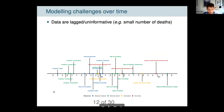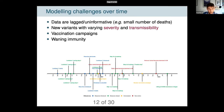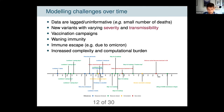This is a timeline of the pandemic with categorised events: red for emergence of different variants, green for lifting restrictions, blue for imposition of restrictions, and yellow for vaccination campaigns. This has presented many modelling challenges. Data can be lagged and uninformative — we relied on death data for a long time, and around July 2020 and again in May 2021, there was only a handful of deaths per day in some regions, less than one. That's not particularly informative when trying to estimate several hundred parameters. The emergence of variants of varying severity and transmissibility, vaccination campaigns, waning immunity, and immune escape — particularly due to Omicron — all added increased model complexity and associated computational burden.